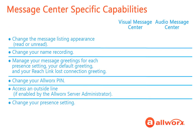Each message center has additional capabilities. In the Visual Message Center, you can change the message listing appearance from read to unread or vice versa. In the Audio Message Center, you can change your name recording, manage your message greetings for each presence setting, your default greeting, and your reach link lost connection greeting, change your AllWorks PIN, access an outside line if enabled, and change your presence setting.